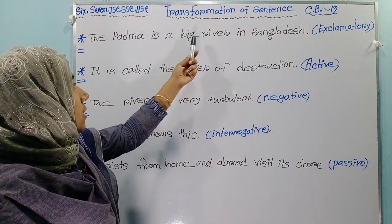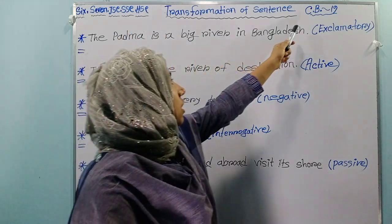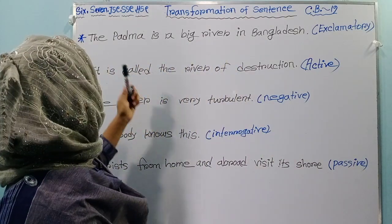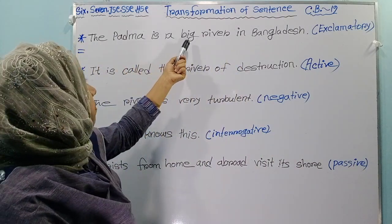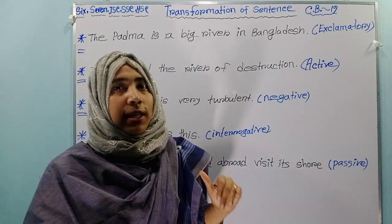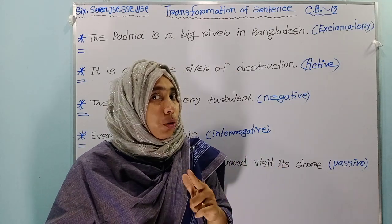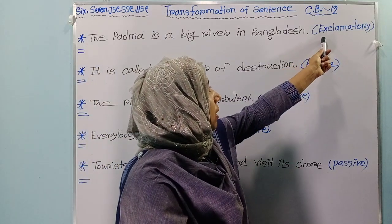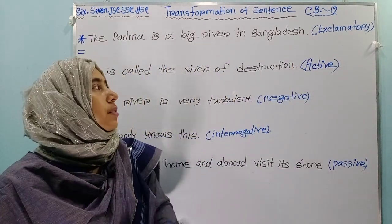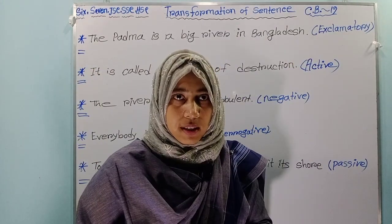This question is about the board question of JSC Khumilabod 2019. Here you see: 'The Padda is a big river in Bangladesh.' You know there are many big rivers in Bangladesh like Padda, Meghna, Jomona, etc., and Padda is one of them. You have to make it an exclamatory sentence. This is an assertive sentence and you have to make it exclamatory.